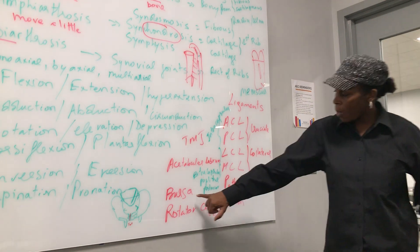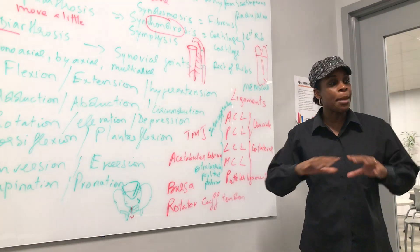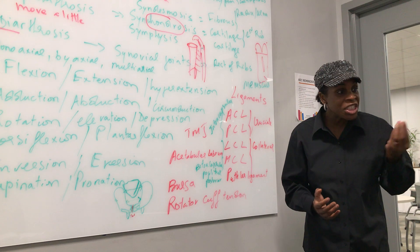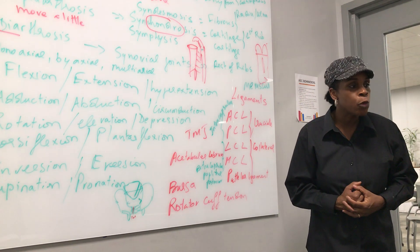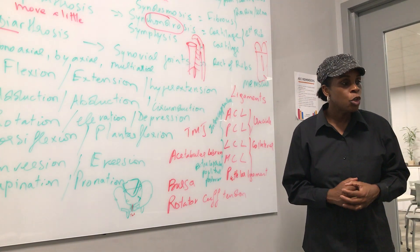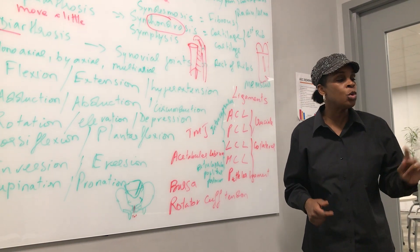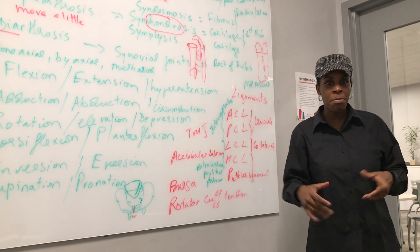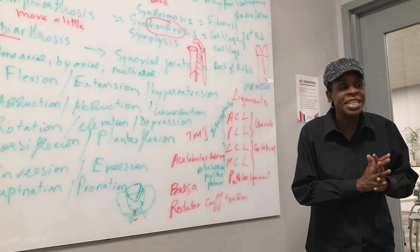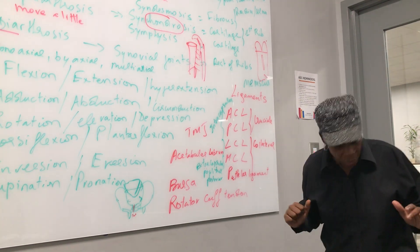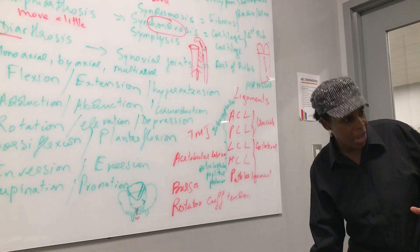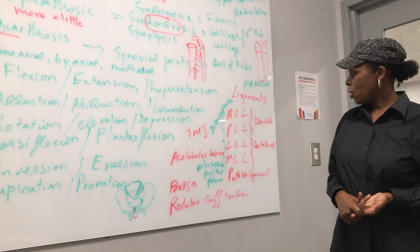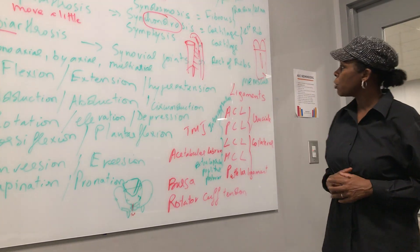Then we talk about bursa — a small sac of fibrous tissue holding synovial fluid for lubrication. In your knee you have 14 or 15 types of bursa — front, back, inside — all to protect your knee. Like when you get on your knee, it won't be hard because you have bursa and the patella to make a cushion.